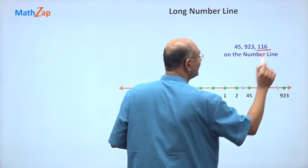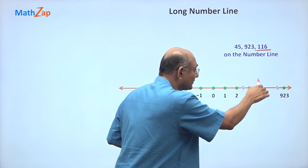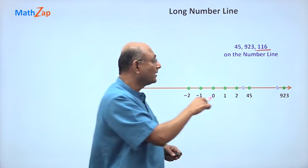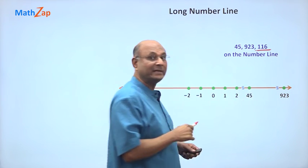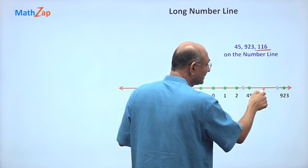What about 116? 116 is bigger than 45. 45, 46, 47, somewhere there. But will it be after 923? No. 116 is before 923. So 116 must be somewhere here.